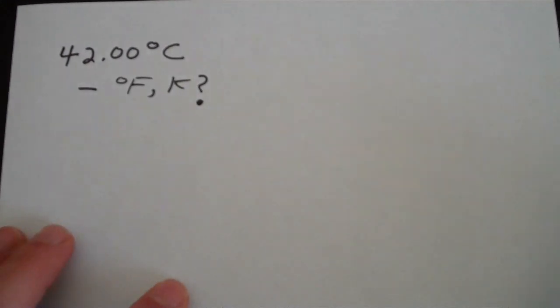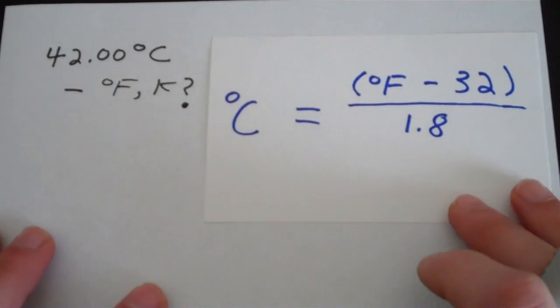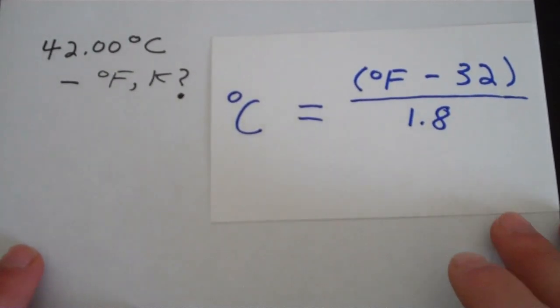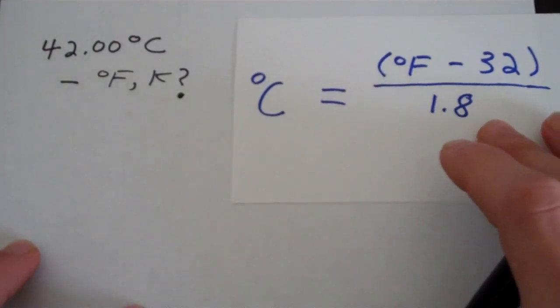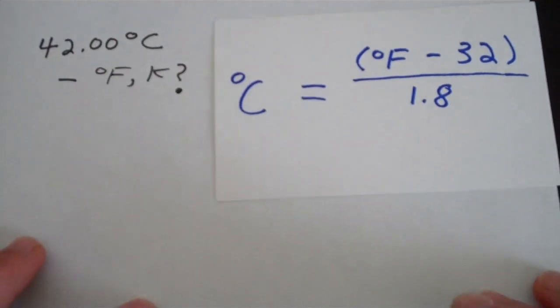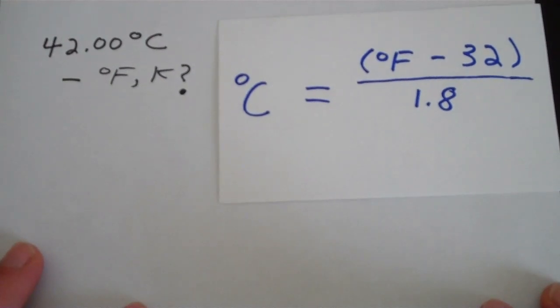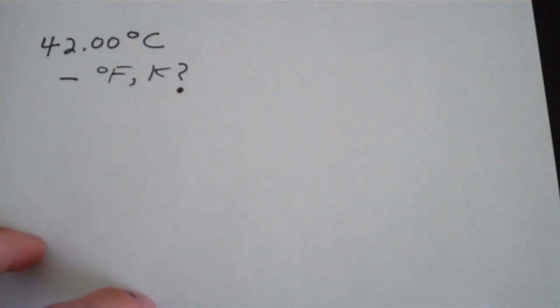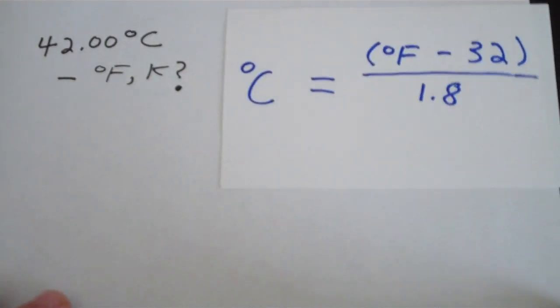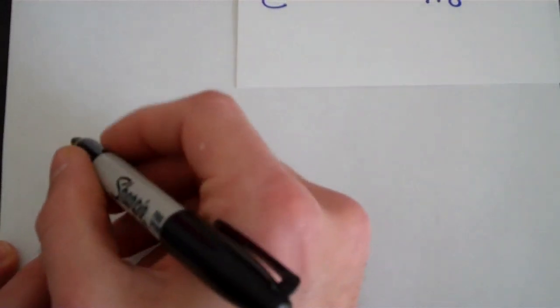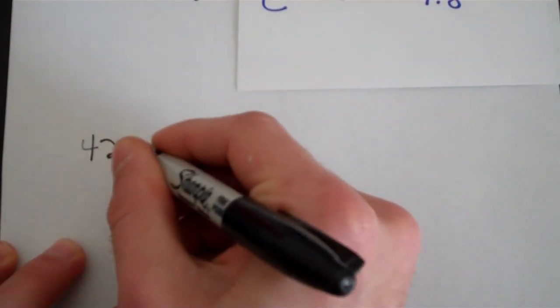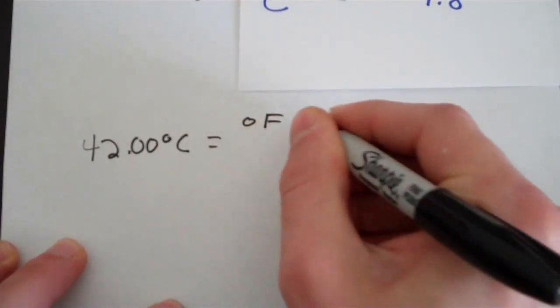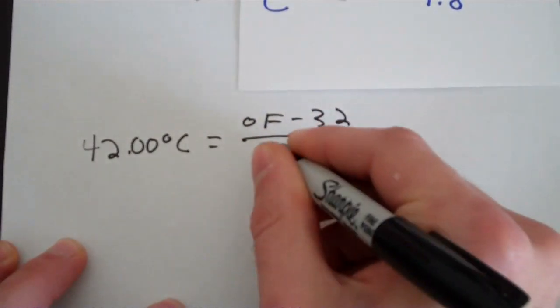So really all we need to do is just apply our formula here. Degrees Celsius, we'll start with Fahrenheit. Degrees Celsius equals degrees Fahrenheit minus 32 over 1.8. So let's just plug 42.00 degrees Celsius into the formula and see if we can't solve for degrees Fahrenheit. So we have 42.00 degrees Celsius equals whatever our value of degrees Fahrenheit is minus 32 over 1.8.